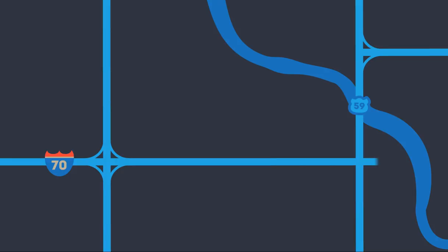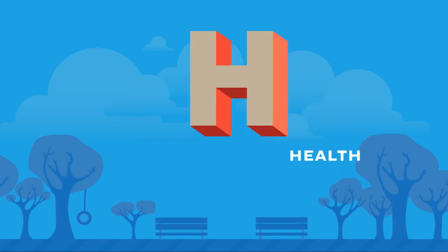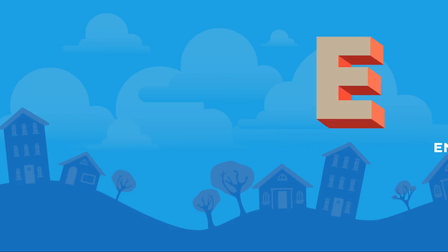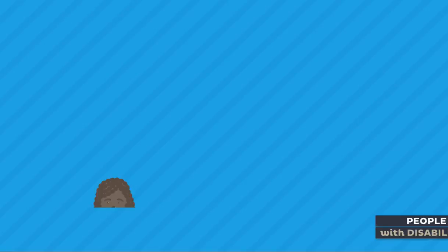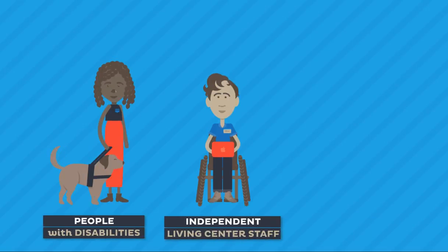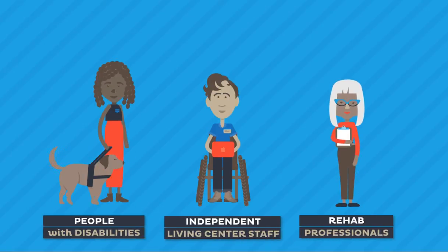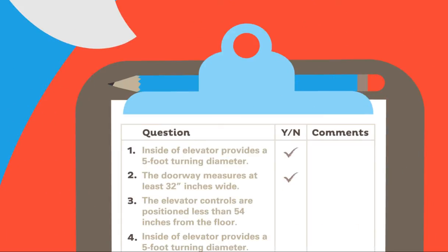So wouldn't it be great if you could check it out online before you go? The Community Health Environment Checklist is a tool that people with disabilities, independent living center staff, rehab professionals, and others can use to rate the usability of community places.